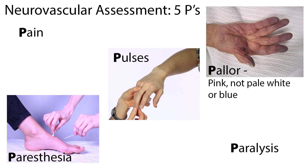Another portion of caring for an arterial line is the neurovascular assessment that includes the five P's. Pain — check for pain in the extremity of the arterial line. Pulses — check for collateral pulses and cap refill. Pallor — check the hand for a nice pink color; we don't want to see paleness or cyanosis.